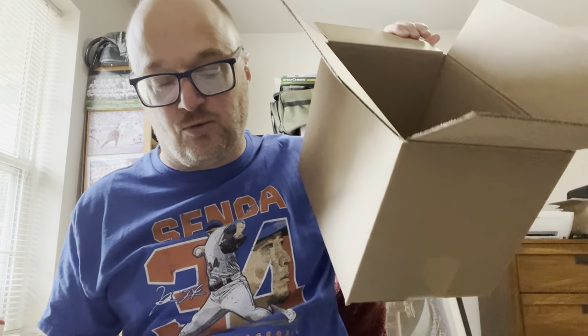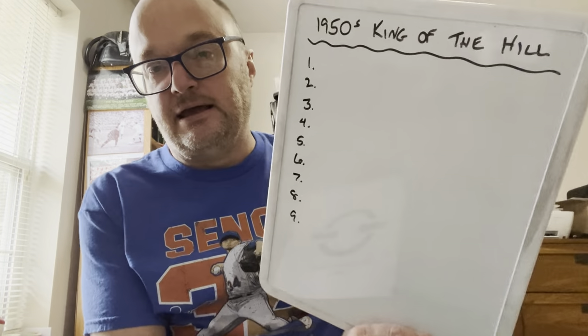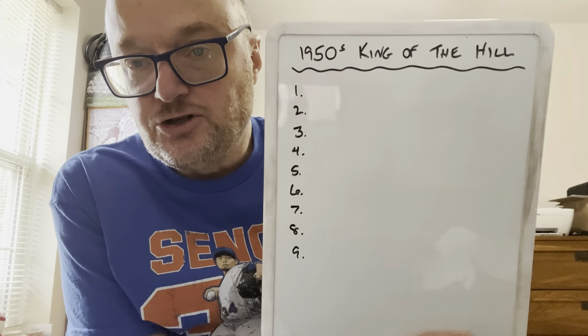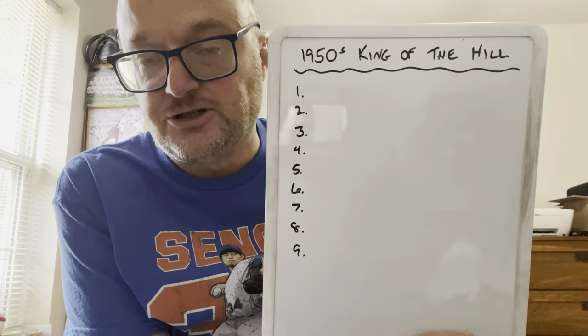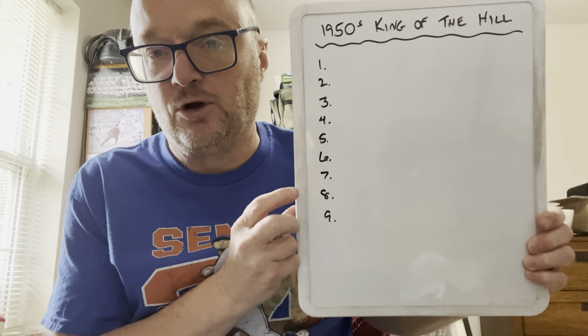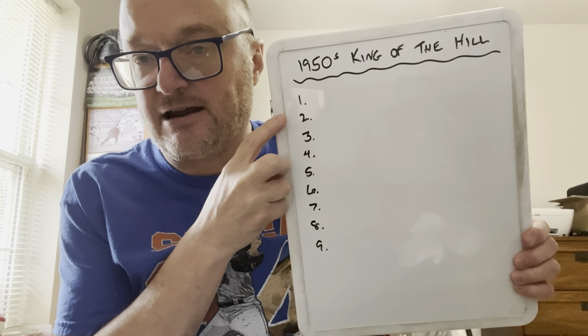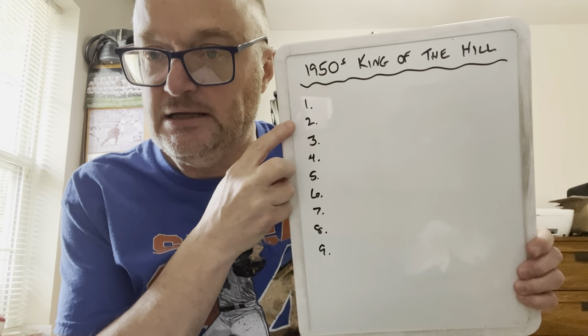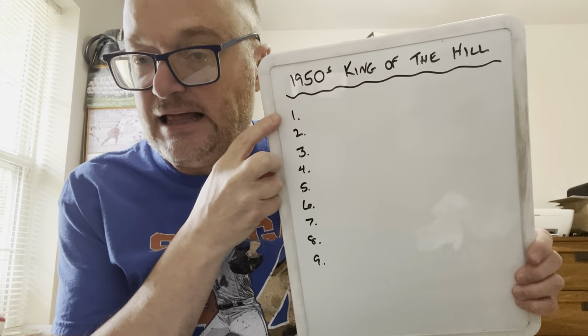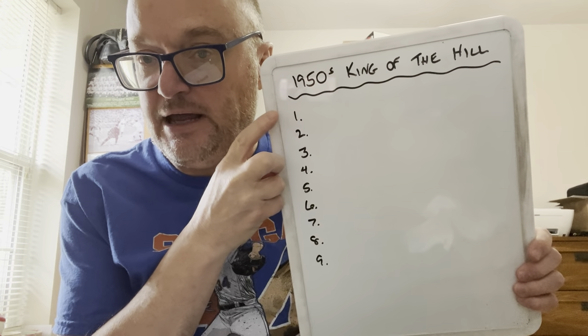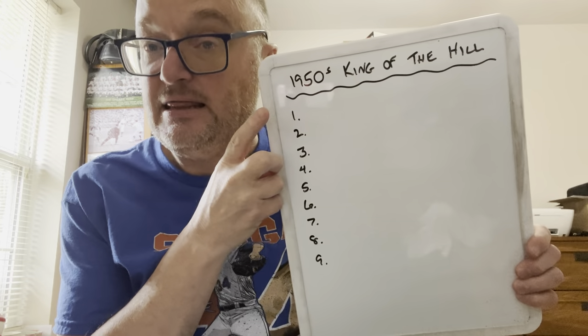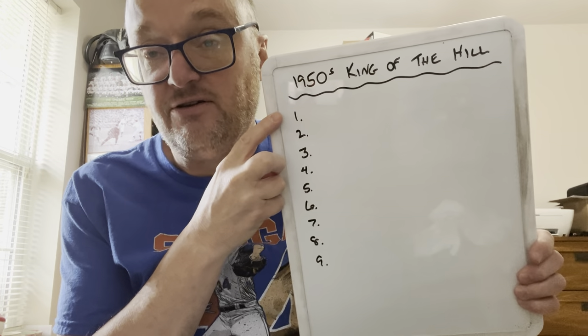Those teams are all in this box, and what we're going to do is draw them randomly, then put them on the King of the Hill listing here. The first team that we draw is actually going to go in space number nine, and we're going to gradually work our way up. The team that's second from the last becomes the visiting team for our first game, and the last team that we draw will be the first King of the Hill.